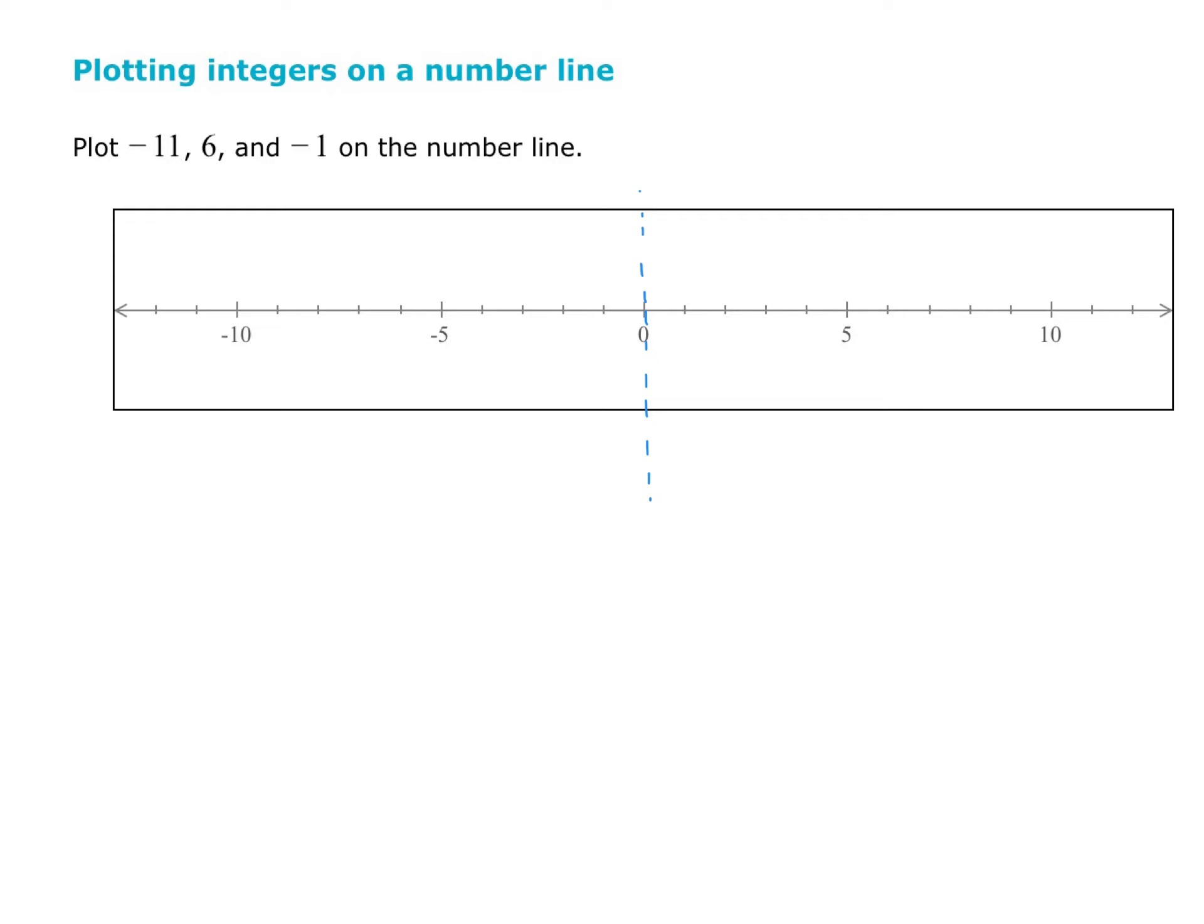So when we're plotting these, negative 11, we're going to go to the negative side, go past negative 10, and there is negative 11.